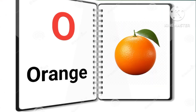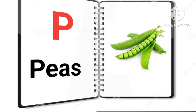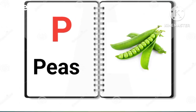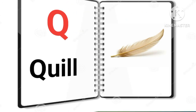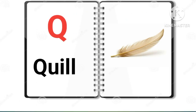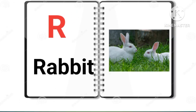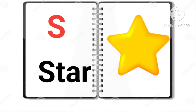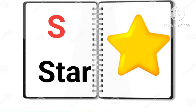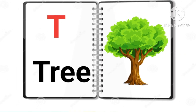O for orange, P for peel, Q for quill, R for rabbit, S for store, T for tree.